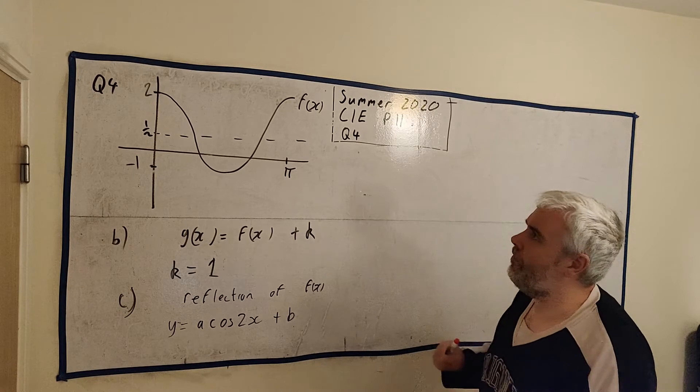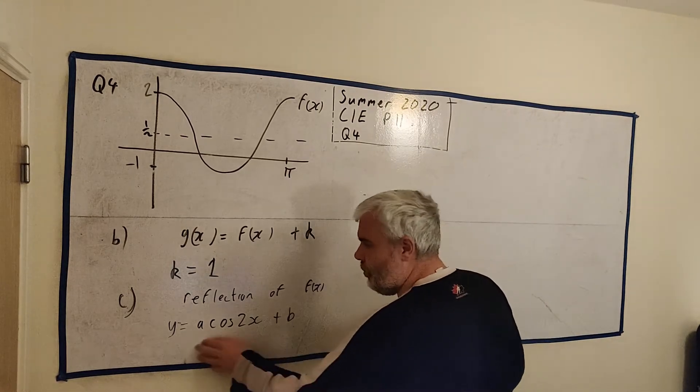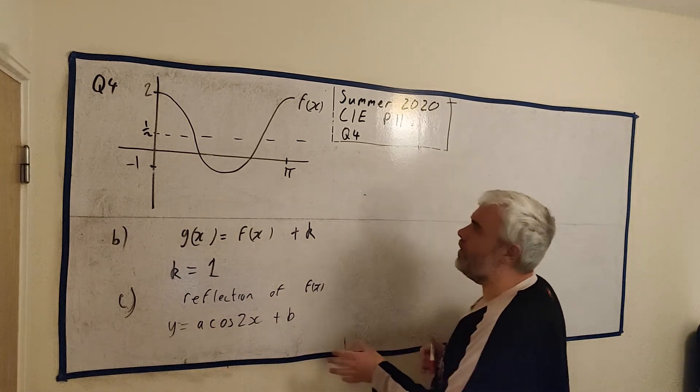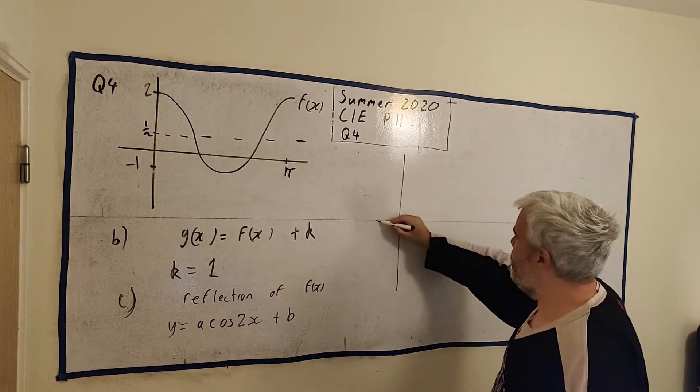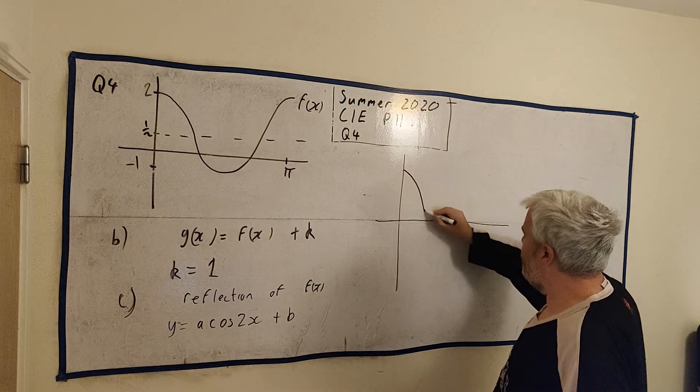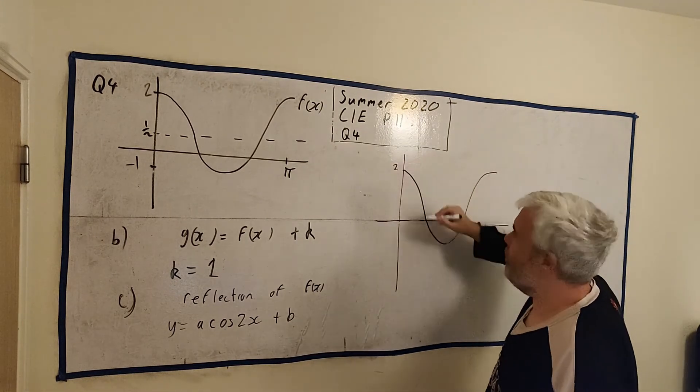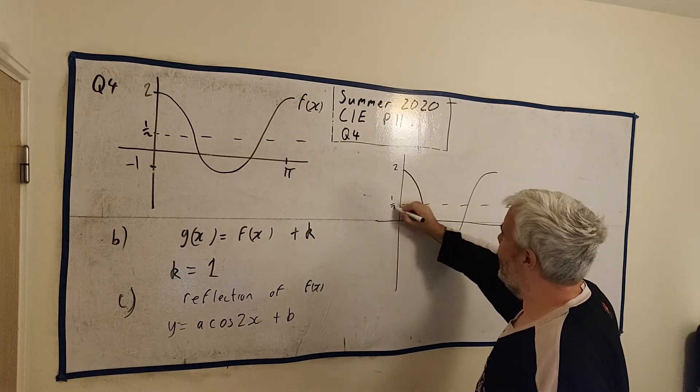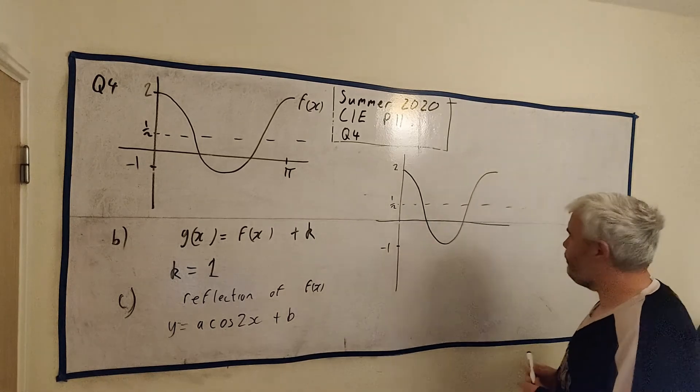So c asks us to reflect f(x) through the x-axis. And make our answer look like this. y equals a cosine 2x plus b. So let's go ahead and reflect it first. Let's draw one here. So I'll draw in the old picture again. It looks like this. Let me put in some of these numbers. We'll even keep the middle of it. The offset was at a half. And this is at minus 1. Okay, reflecting, it's quite easy.